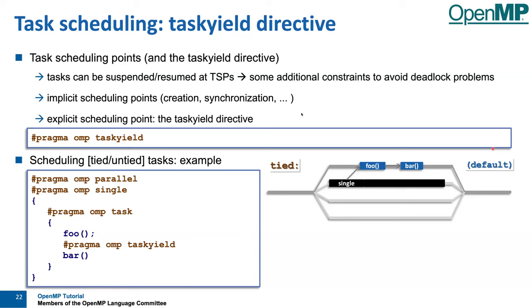You can still query the OpenMP thread ID inside a task. For example, if in function foo before a task_yield you ask for the current thread ID, you might get 42. For a tied task, in bar after the yield you will get the same answer — the thread will not give away the task. In the untied case, however, that answer might be different: in foo you get 42, but in bar when you ask the same question, you probably get a different answer.